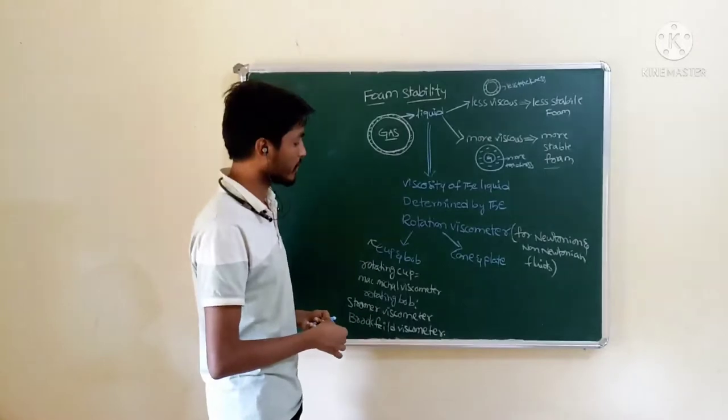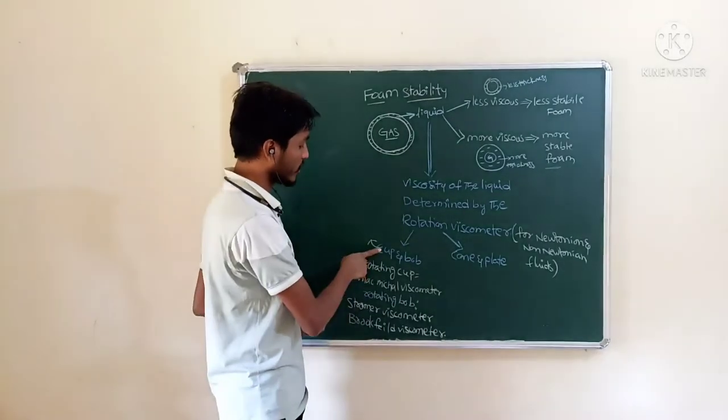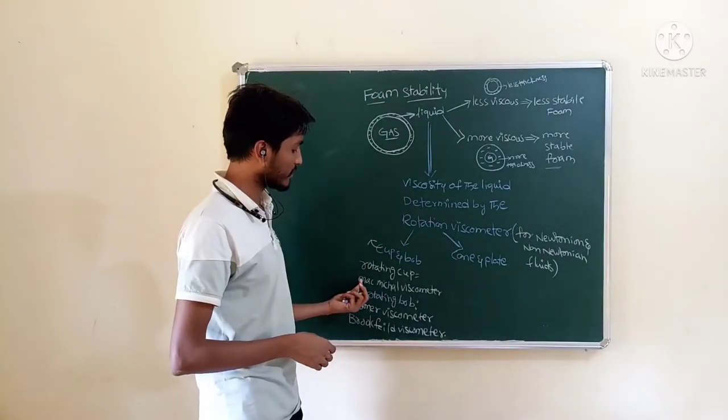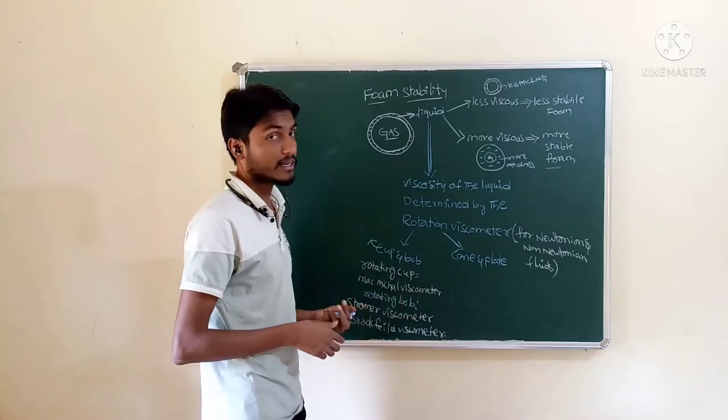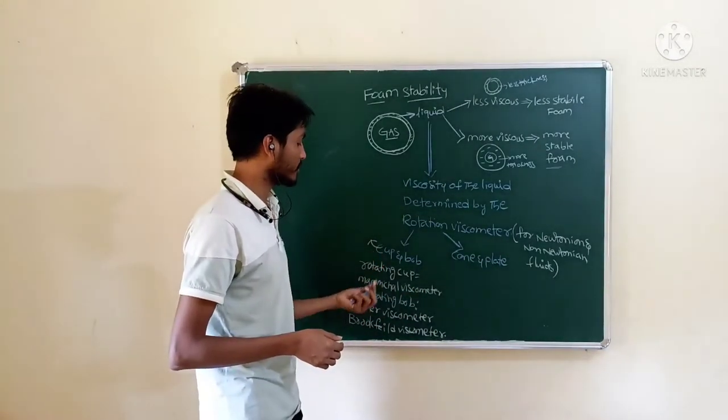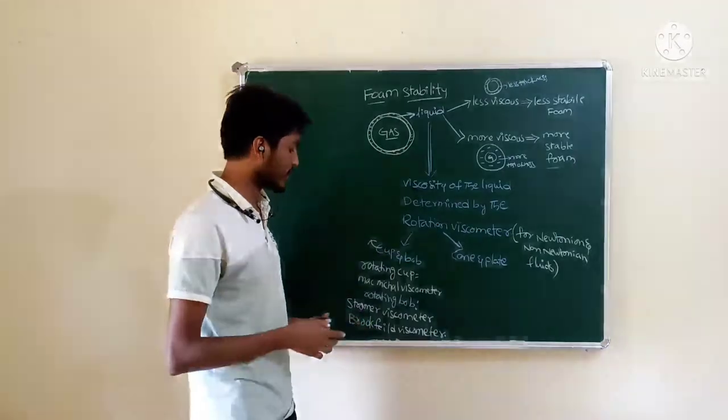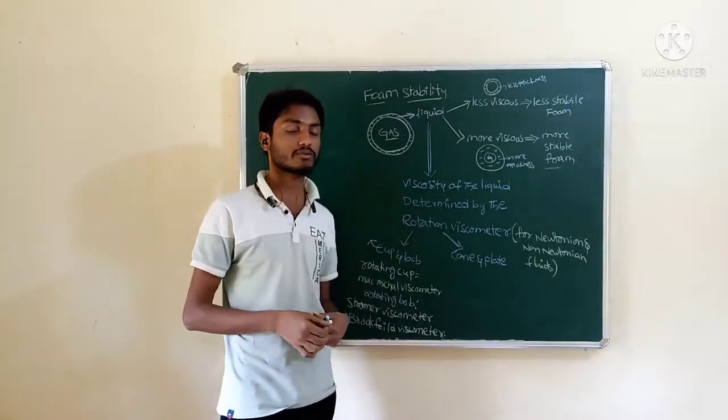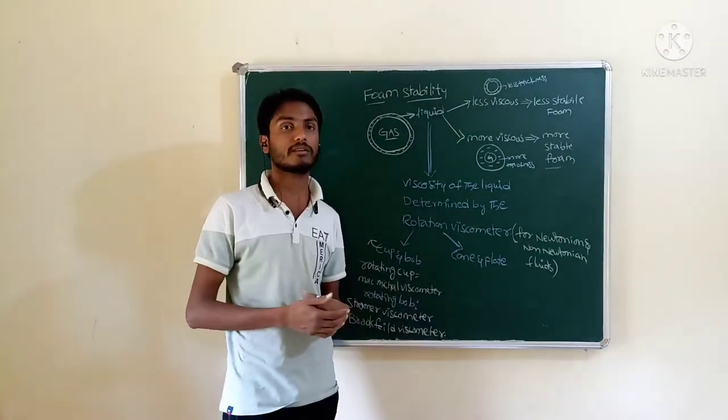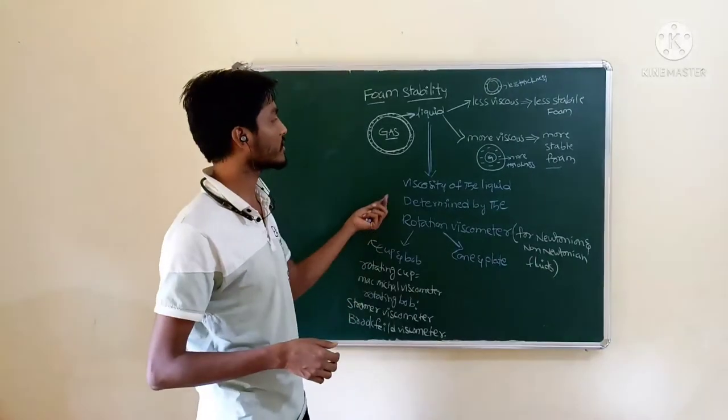Cup and Bob and Conan plate. In the rotating cup, we can call it as a MAC-Microviscometer. If rotating body is there, we can call it as a Stromer viscometer or Brookfield viscometer. This is about the viscosity of the liquid.